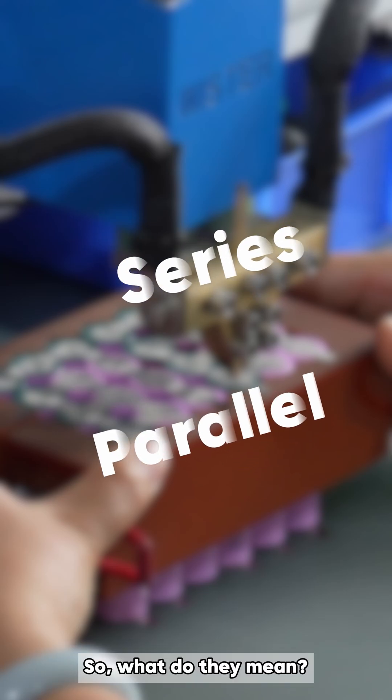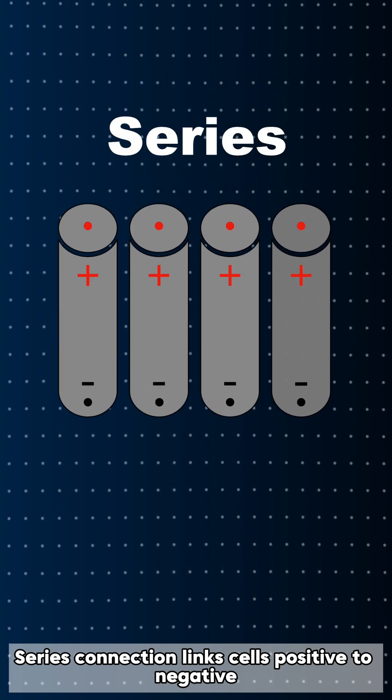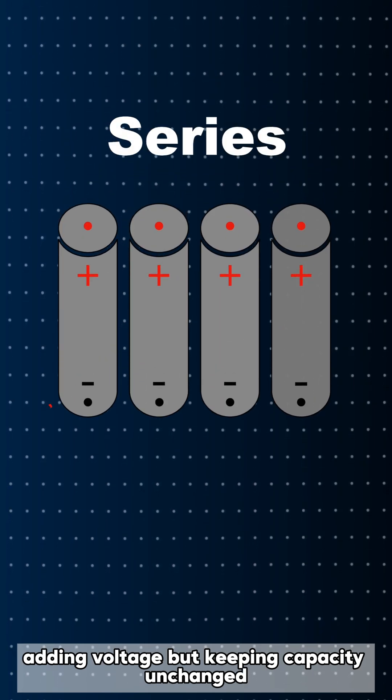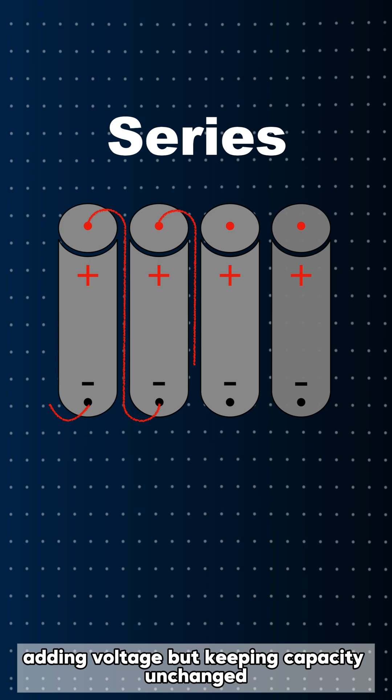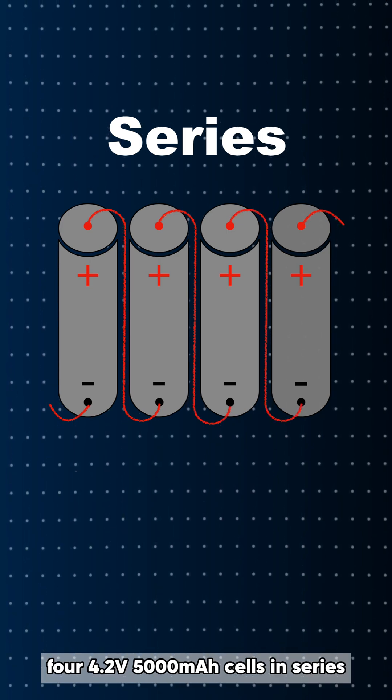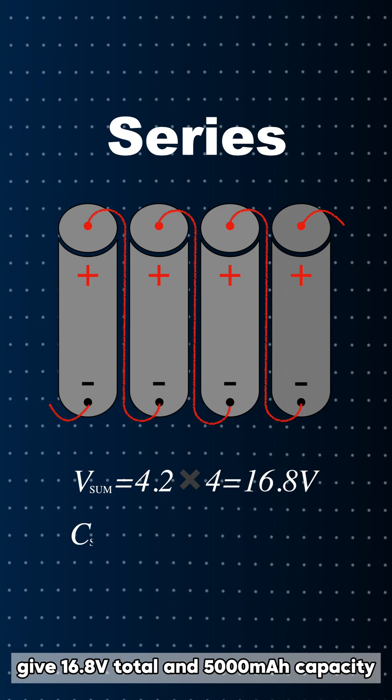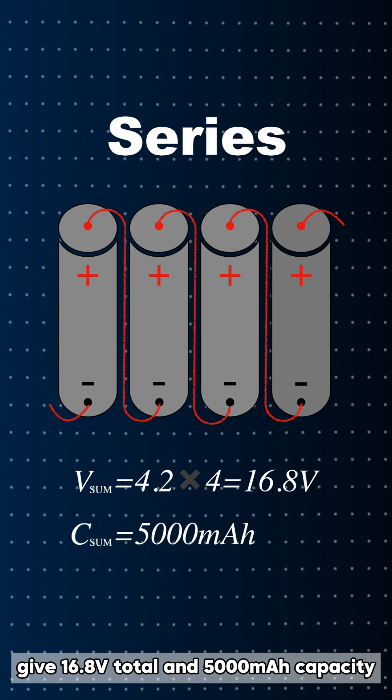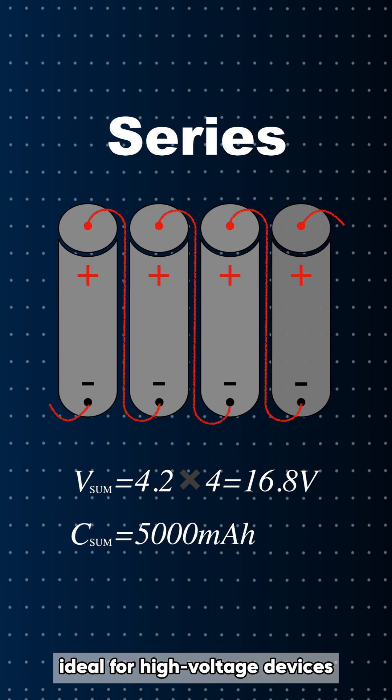So, what do they mean? Series connection links cells positive to negative, adding voltage but keeping capacity unchanged. For example, four 4.2 volts 5,000 milliamp hours cells in series give 16.8 volts total and 5,000 milliamp hours capacity, ideal for high-voltage devices.